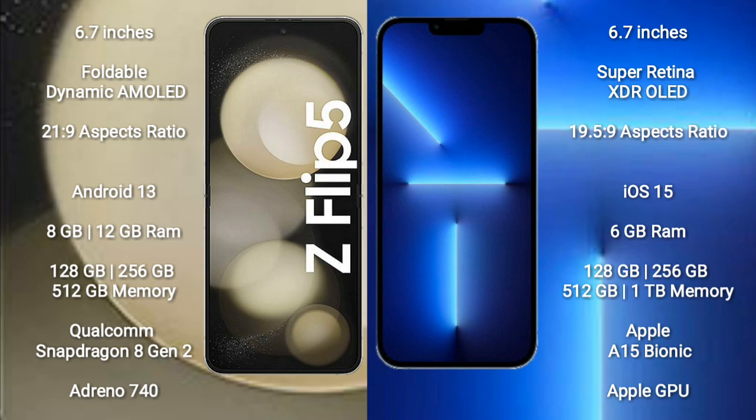The Samsung Galaxy Z Flip 5 comes with 8GB or 12GB of RAM and 128GB, 256GB, or 512GB of internal storage, powered by a Qualcomm Snapdragon 8 Gen 2 processor with an Adreno 740 GPU. The iPhone 13 Pro Max comes with 6GB of RAM and 128GB, 256GB, 512GB, or 1TB of internal storage, powered by the Apple A15 Bionic processor with Apple's own GPU.